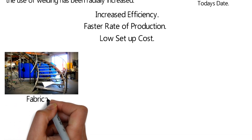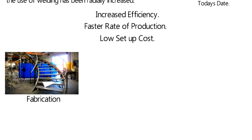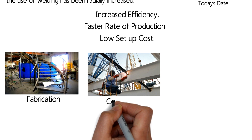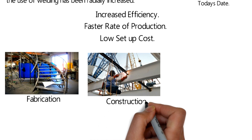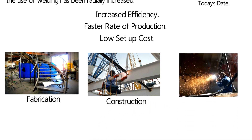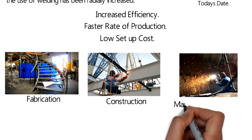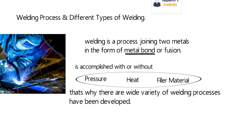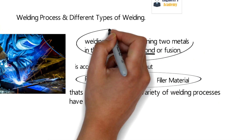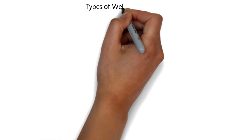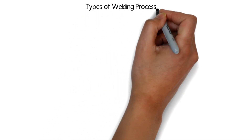Welding is used in a lot of industries, such as in fabrication works, repairing works, construction sites, and maintenance and repair works. Let's now check out the types of welding.